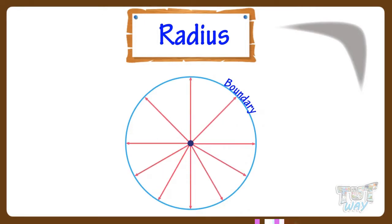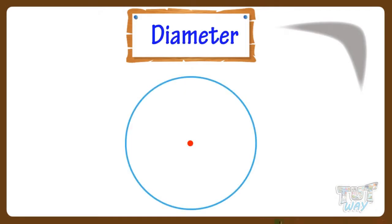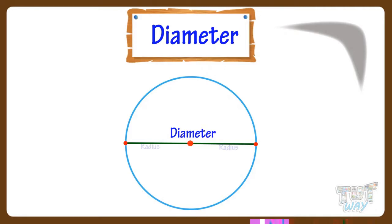You can draw any number of radii. Now let's learn what is a diameter. A straight line that divides the circle in exactly two parts is known as a diameter. It is also two times the radius.